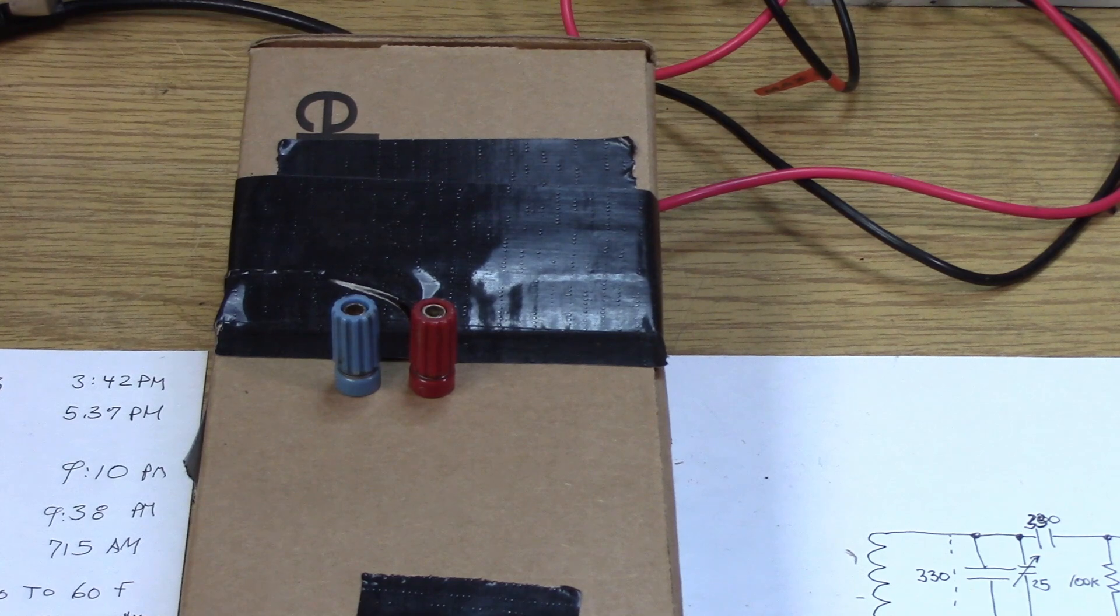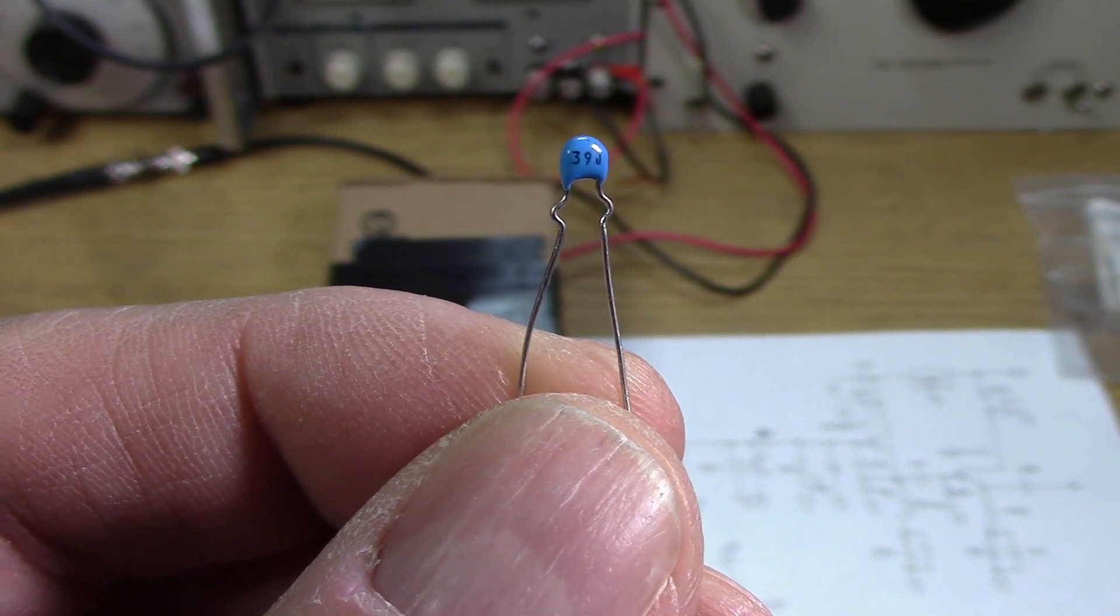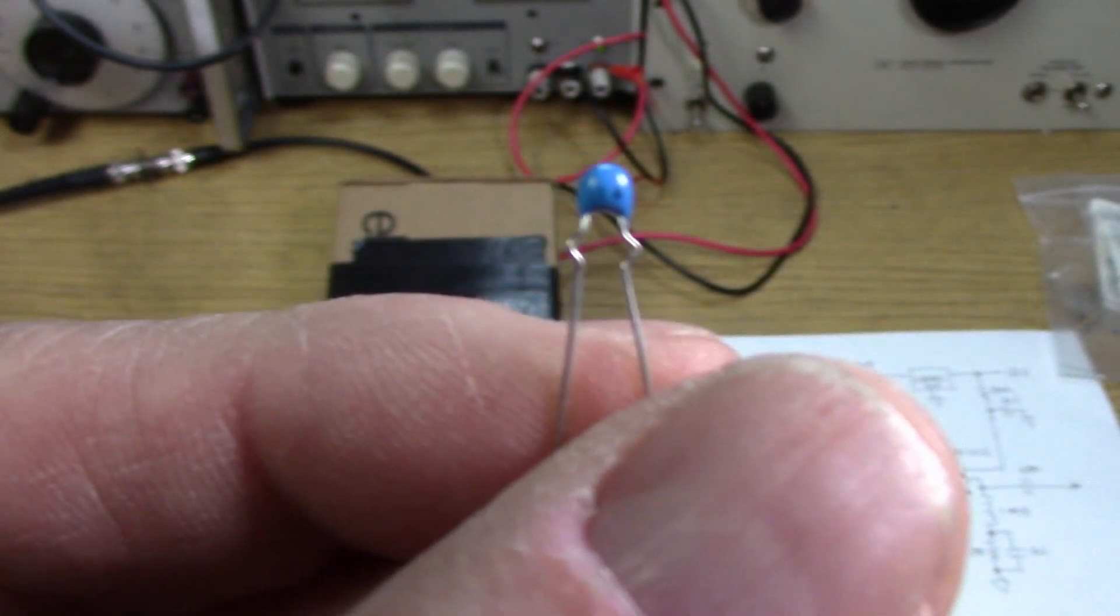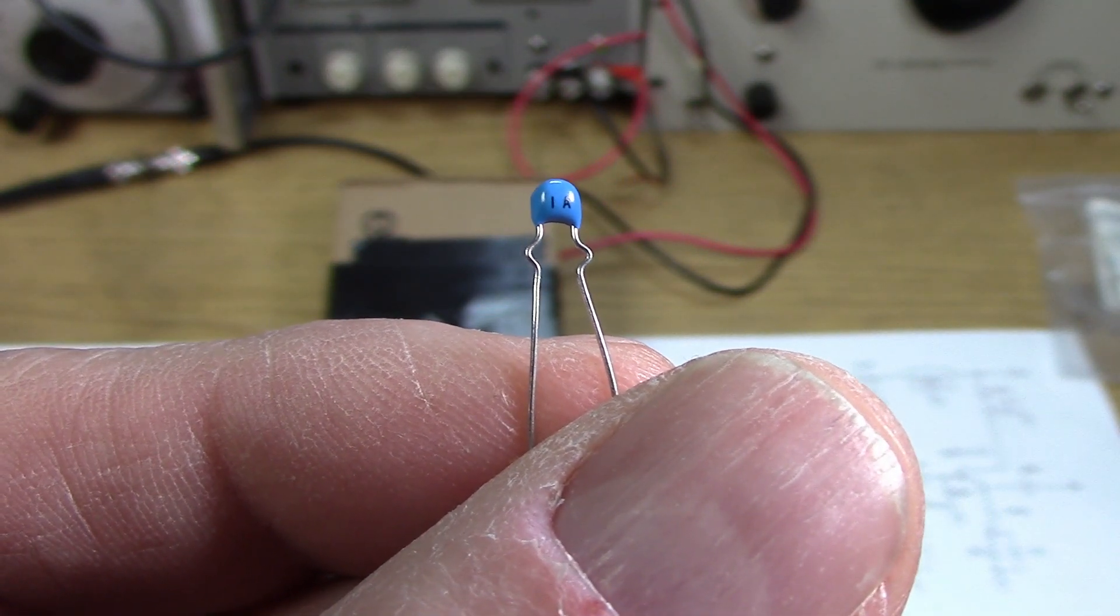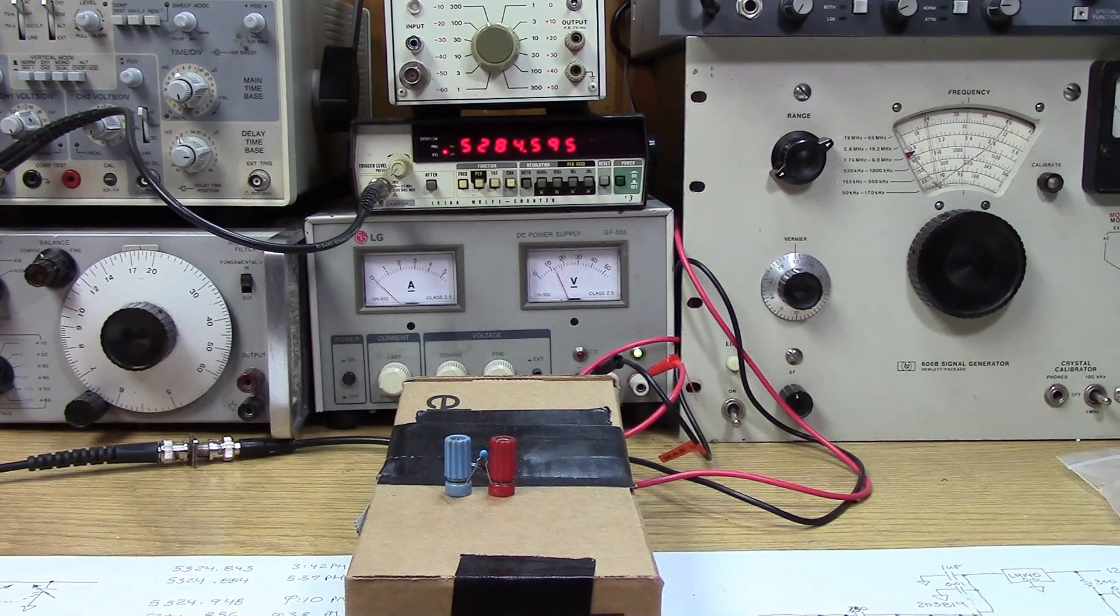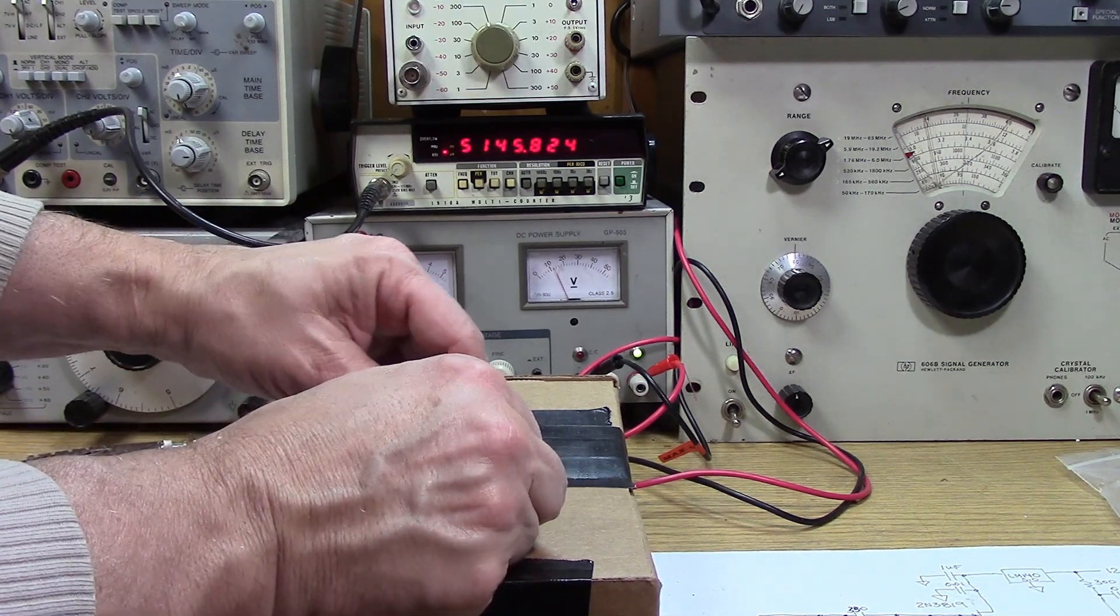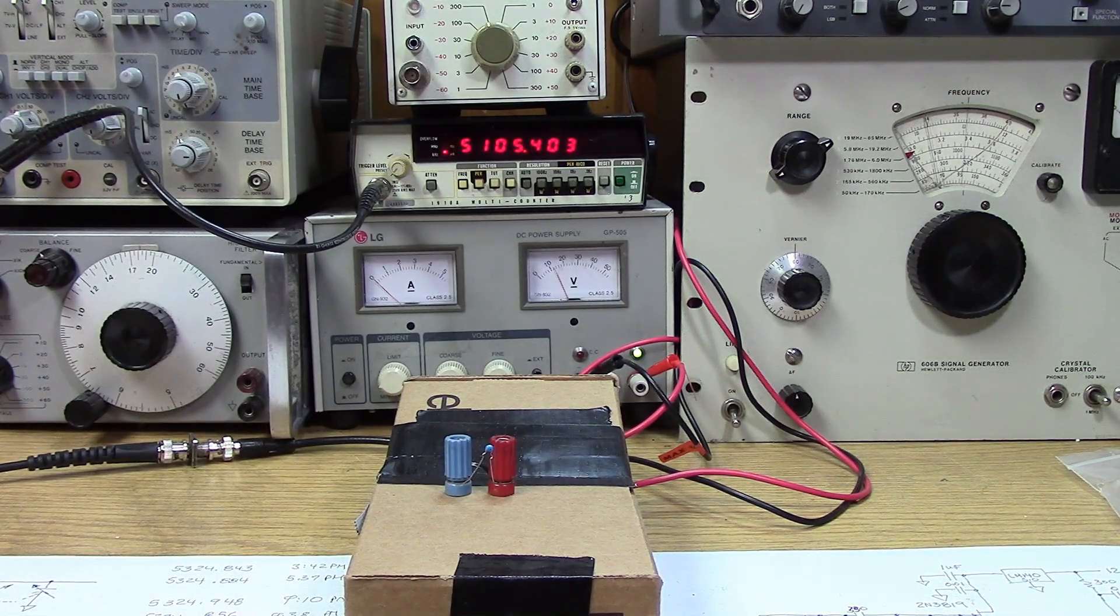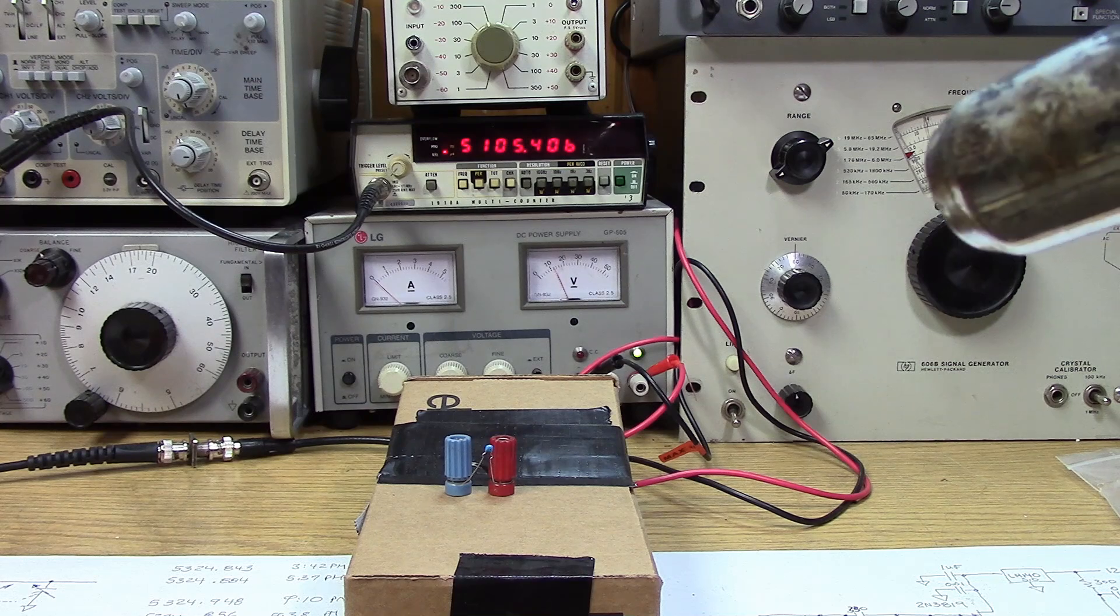Okay, our first victim - it says 39J, which means it's 39 picofarad, J means five percent tolerance. On the back, 1A, so that's a class one. We have to make sure we have it hooked up. Five two eight four. Let's hook up the capacitor. Five one oh three, okay so we know we have the capacitor connected. Now let's hit it with the heat gun and see if we can get some changes here.